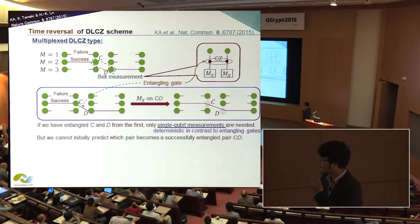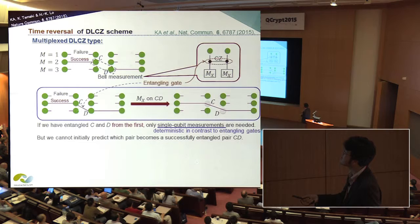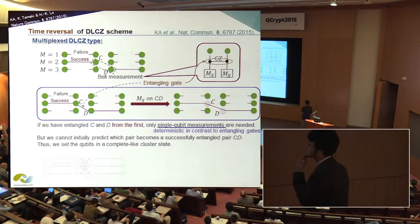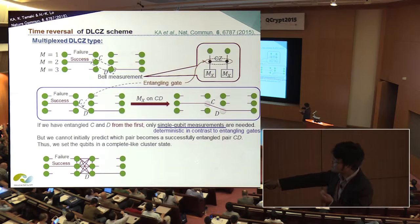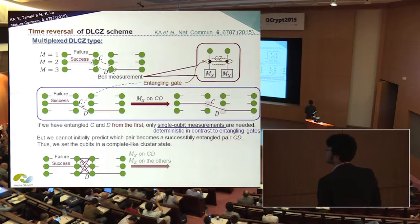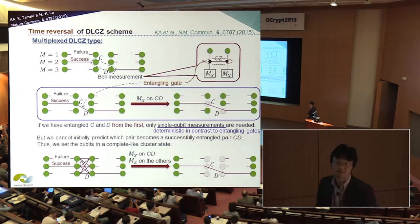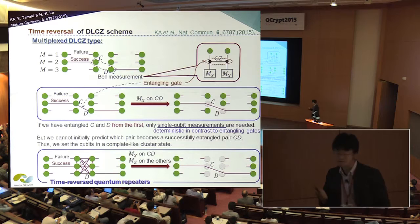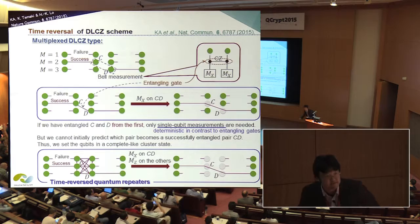However, we cannot predict initially which pair becomes a successfully entangled pair of qubits C and D. Therefore, we would like to propose this type of situation: from the first, initially we prepare a complete graph state locally. After that, we start entanglement generation. Depending on success or failure of the entanglement generation process, we perform the X-basis measurement on qubits C and D. For the others, we just apply the Z-basis measurement. Therefore, we call it the time-reversed quantum repeater, in the sense that in our protocol we first perform the entanglement swapping in some sense, and after that we start entanglement generation.